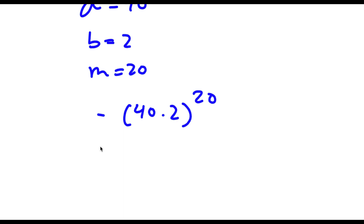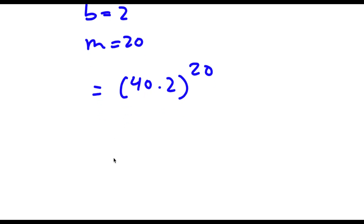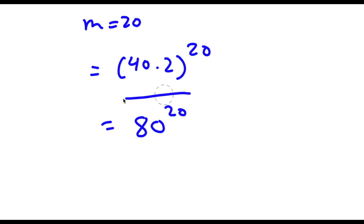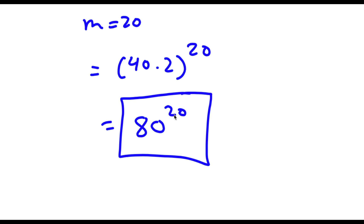So now, 40 times 2 is equal to 80. So now I have 80 to the power of 20. And this is actually the most we can simplify this. So 80 to the power of 20 is our answer.